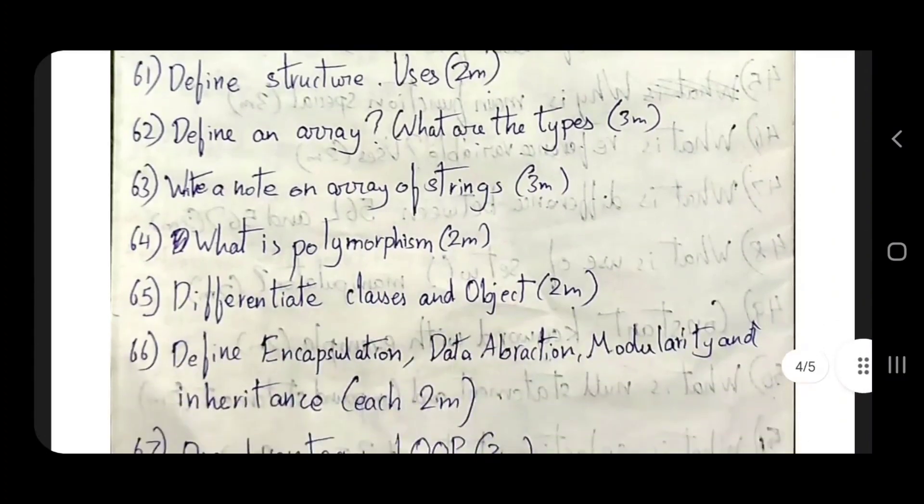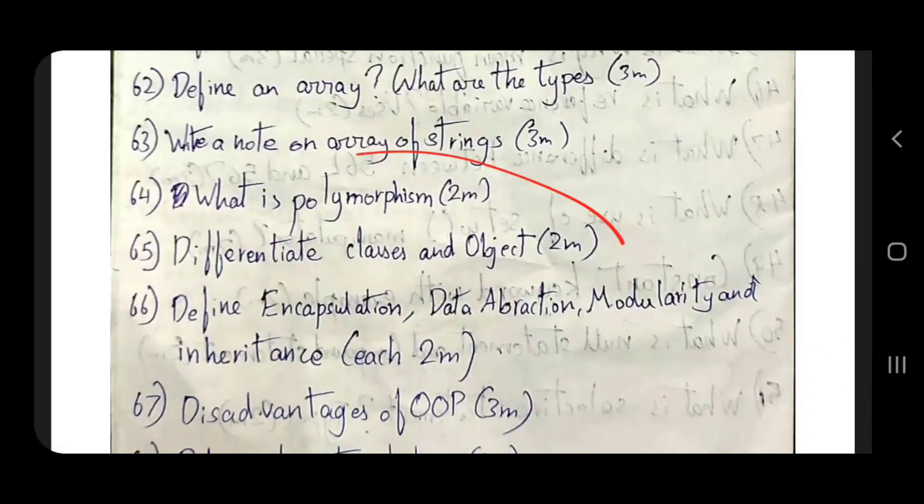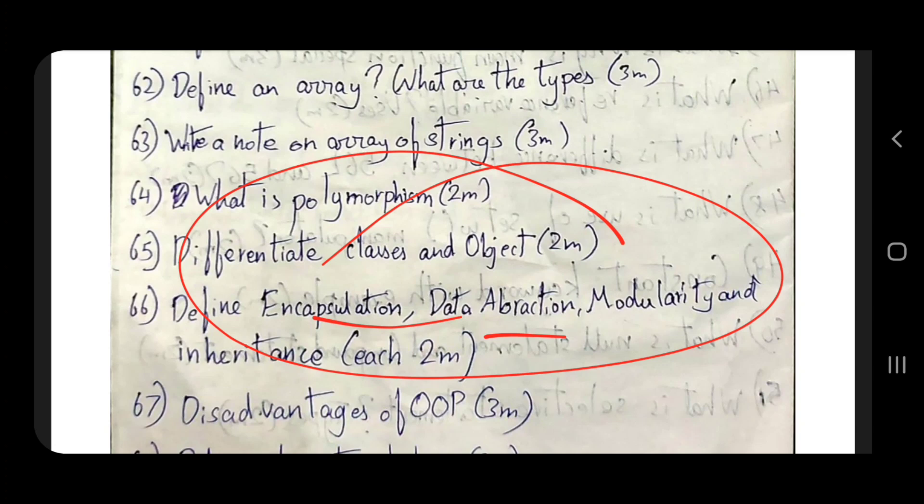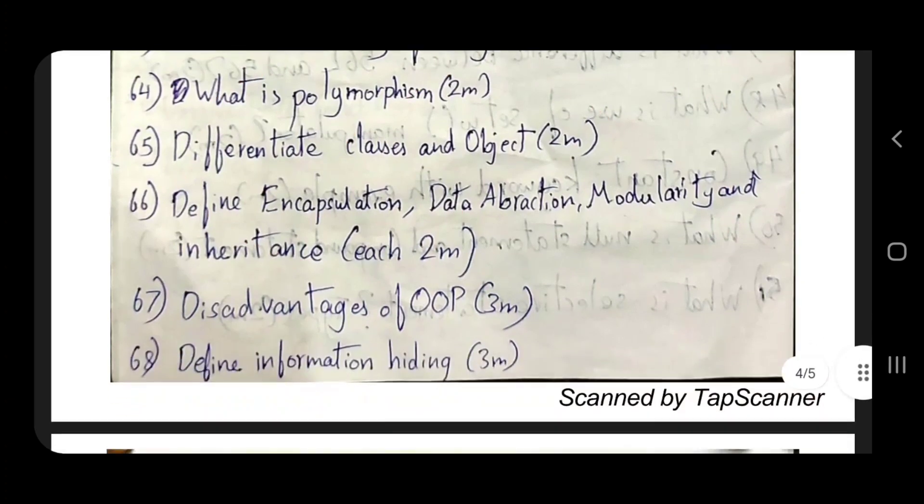What is polymorphism? Classes and object definitions, 3 mark. Encapsulation, data abstraction, modularity, inheritance - features of OOPS. Object-oriented programming. Dissert features of OOPS - very, very important.